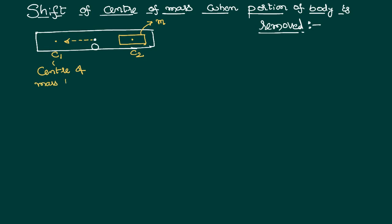Therefore, C1 is the center of mass of the remaining mass. What is the remaining mass? If we assume the total mass as M, the remaining mass will be M minus m. Here, O is the center of mass of the original body whose mass is equal to capital M, and C2 is the center of mass of the removed portion.